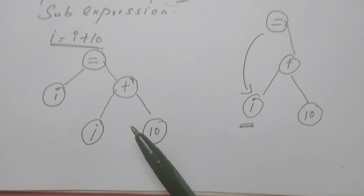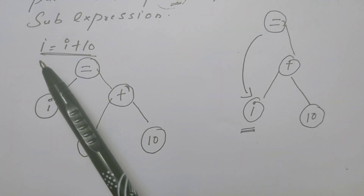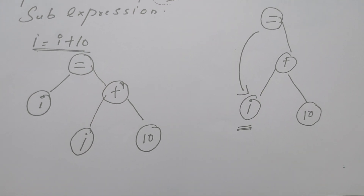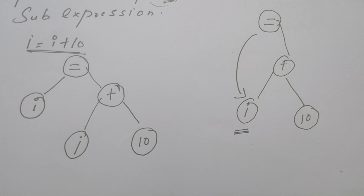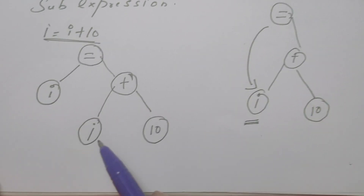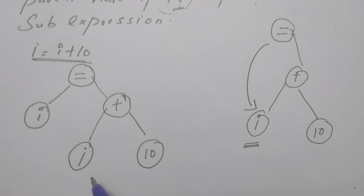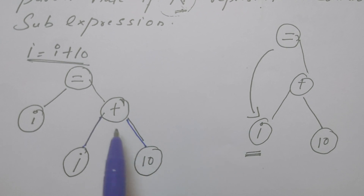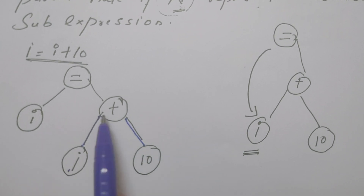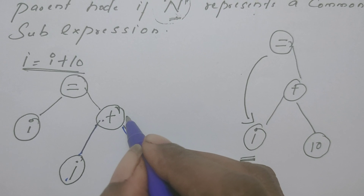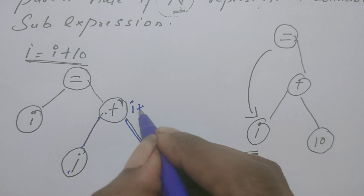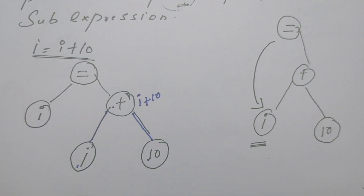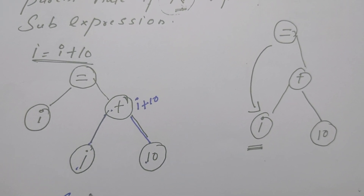I have given an example here. I have taken a very simple expression: i is equal to i plus 10. For this expression, I have drawn syntax tree as well as DAG. First, let us see the syntax tree. For i and for 10, the leaf nodes are created and then these leaf nodes are connected to the interior node plus. The operation i plus 10 is done. So the value at this node is nothing but i plus 10. Then this value is being assigned to i. So this graph is the syntax tree.